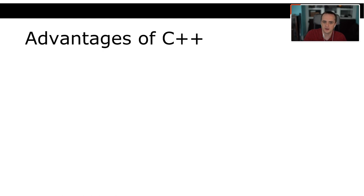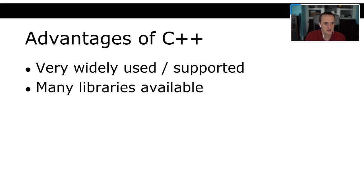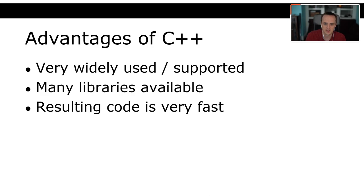Some advantages of using C++: it's very widely supported and widely used. There are many libraries available for C++. In this course, we'll be using one library called SFML — the Simple and Fast Multimedia Library — for drawing textures to the screen and handling input events. If we were to write our own cross-platform graphics library, that would probably be a PhD thesis. So we're using SFML for convenience, but everything else in the course will be written from scratch in C++.